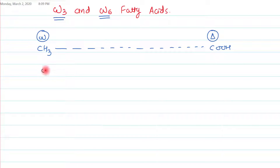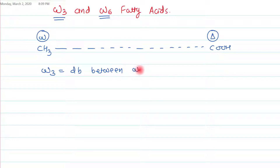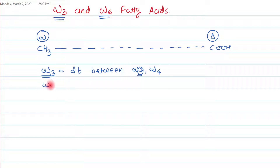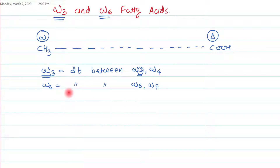In the case of omega-3 fatty acids, there is a double bond between the omega-3 carbon and omega-4 carbon. Remember, always the lesser number of the carbon making a double bond is referred to in the naming system of the fatty acid. For omega-6 fatty acids, the double bond will be present between the omega-6 and omega-7 carbon.